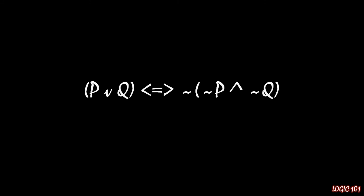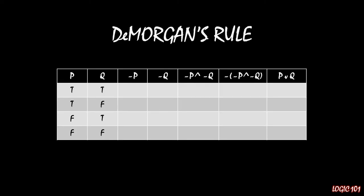As it turns out, these two things are logically identical: p or q is the same thing as saying not (not p and not q). We can verify this using a truth table. Here I have filled out all of the columns, and for columns one and two we have every single combination of truth values for the two simple sentences p and q.